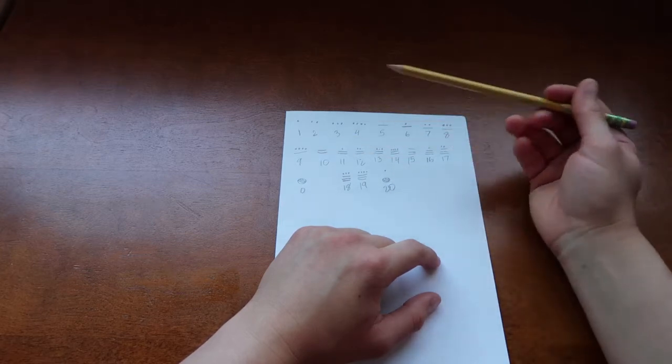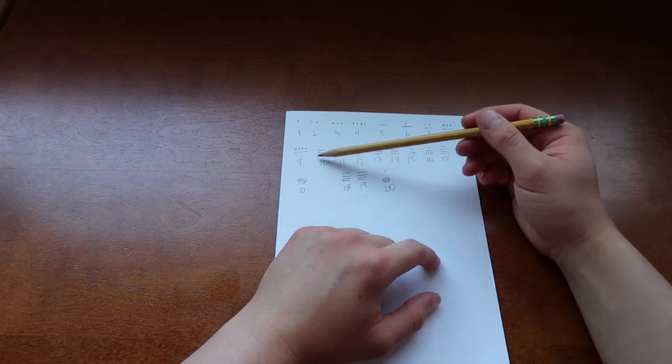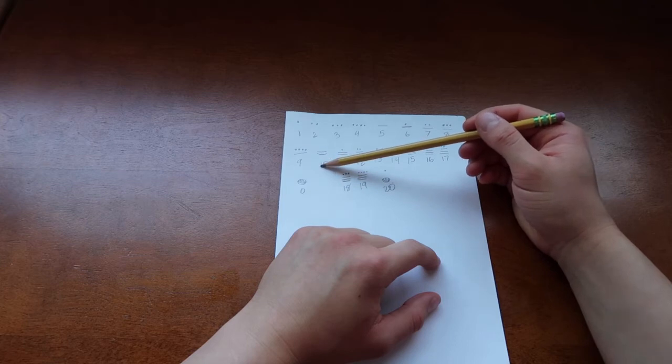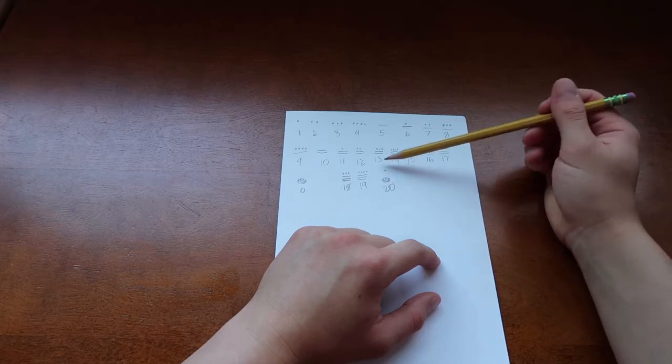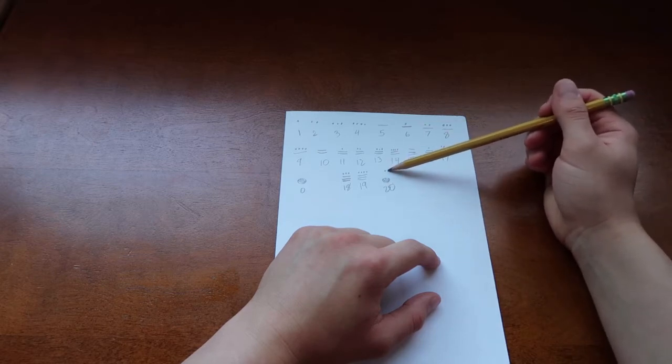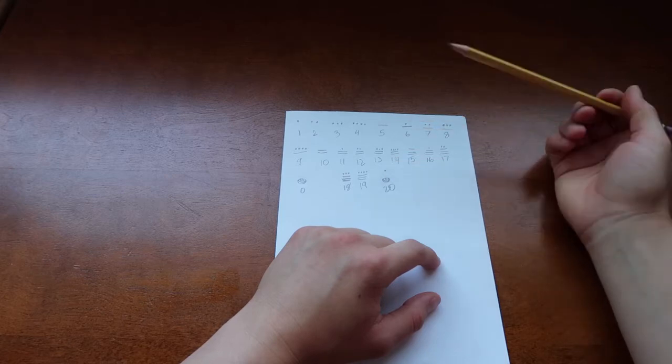For us, our number system is different than the Mayans. We move up a digit when we get to 10. So we have 1 in the 10s place and a 0. And then for 20, we have 2 in the 10s place and a 0. But for the Maya, they did it where they put their 20 up here. So any dot up here is basically a quantity of 20.